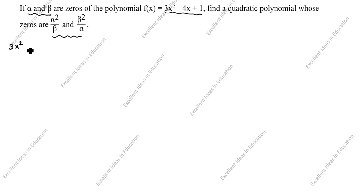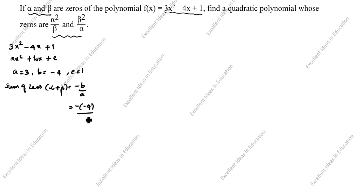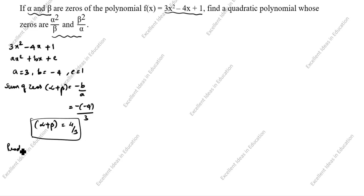What is given: 3x² - 4x + 1. The standard quadratic polynomial equation is ax² + bx + c. So a = 3, b = -4, c = 1. The sum of zeros: alpha + beta = -b/a. Since b is -4, that gives -(-4)/3 = 4/3. So alpha + beta = 4/3. The product of zeros: alpha × beta = c/a = 1/3.